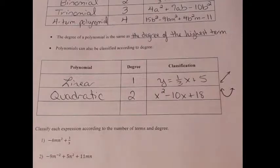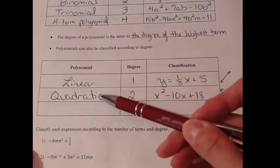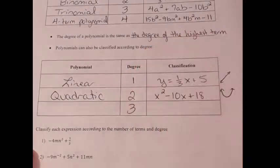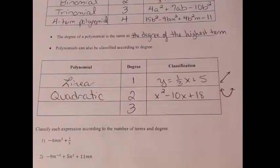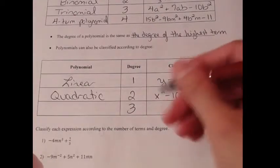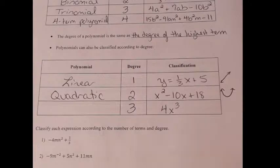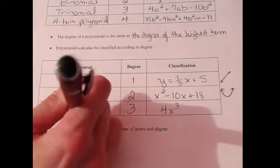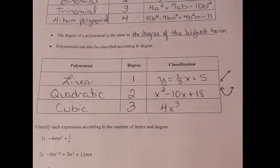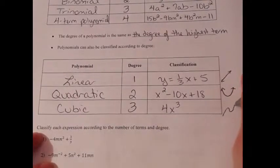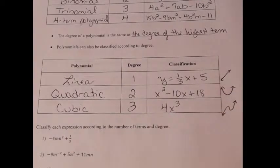The degree of a polynomial is the same as the power of its highest term — degree two is quadratic, degree one is linear. Another classification you'll potentially see is degree three. An example is simply 4x to the third power. A degree-three polynomial is called cubic. Cubic functions take on yet another shape — roughly an S-curve — and there are three roots, something you'll explore further in your next algebra class.